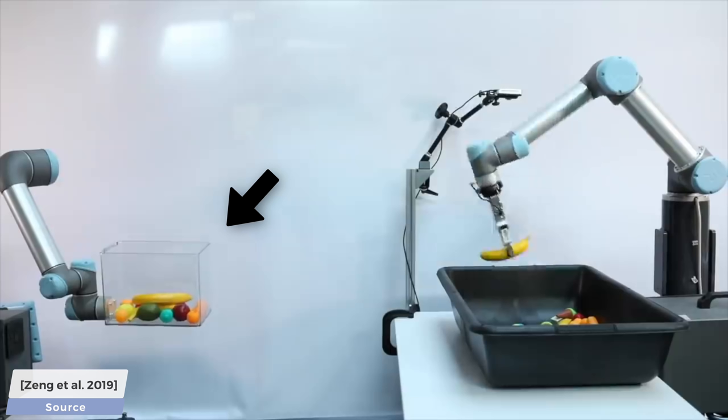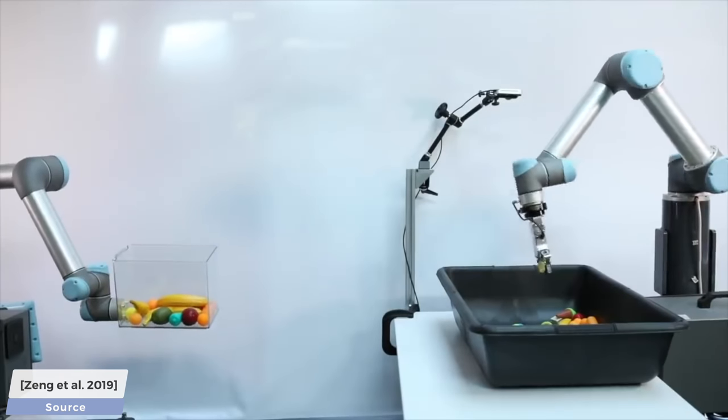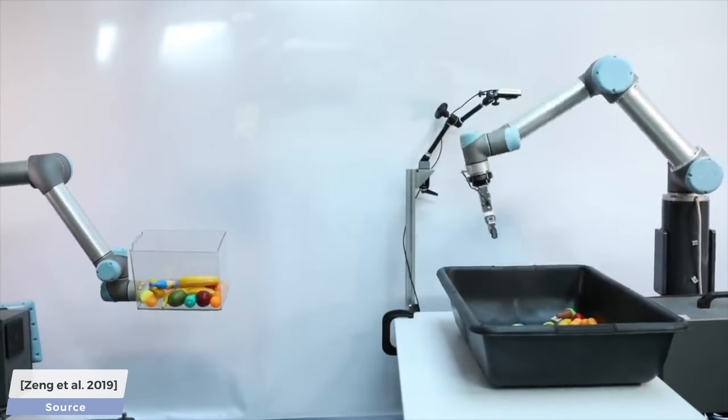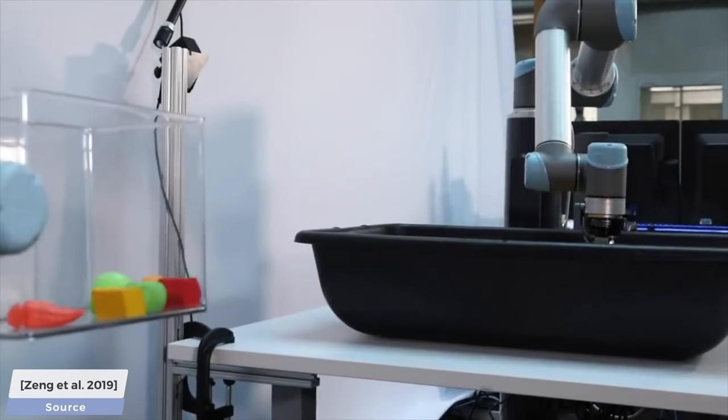However, there is a catch here, which is that this box is outside of the range of the robot arm. Therefore, it has to throw it in there with just the right amount of force for it to end up in this box. It can perform 500 of these tosses per hour.